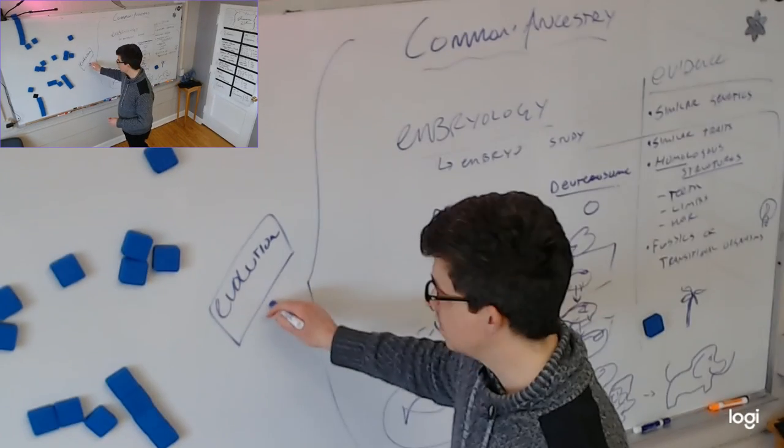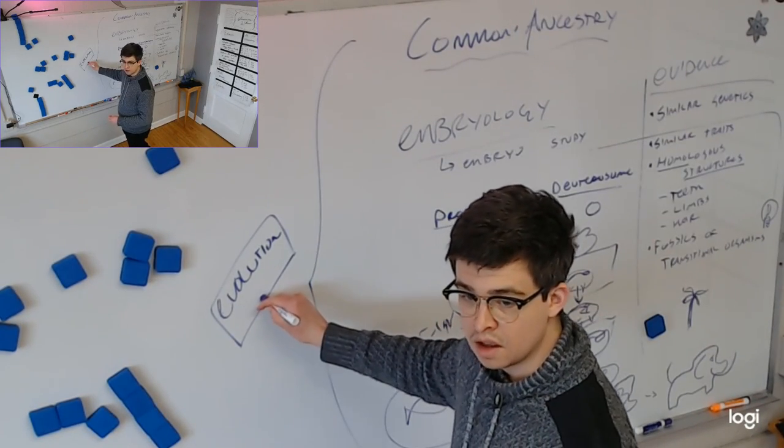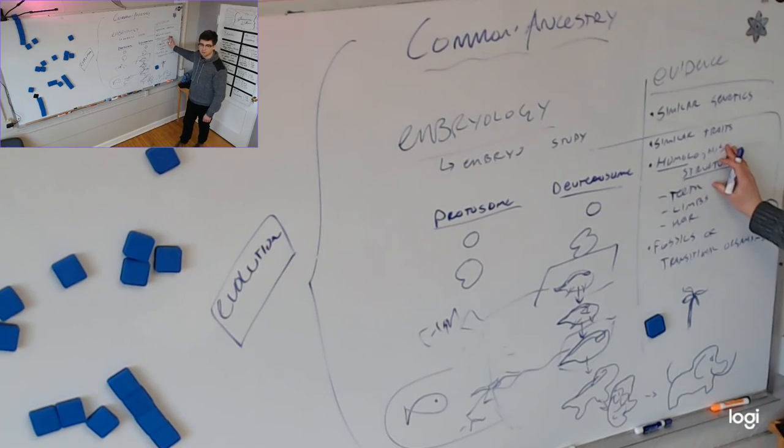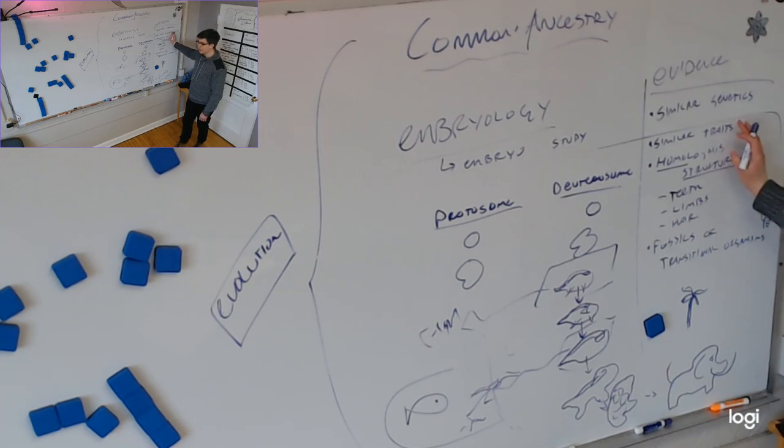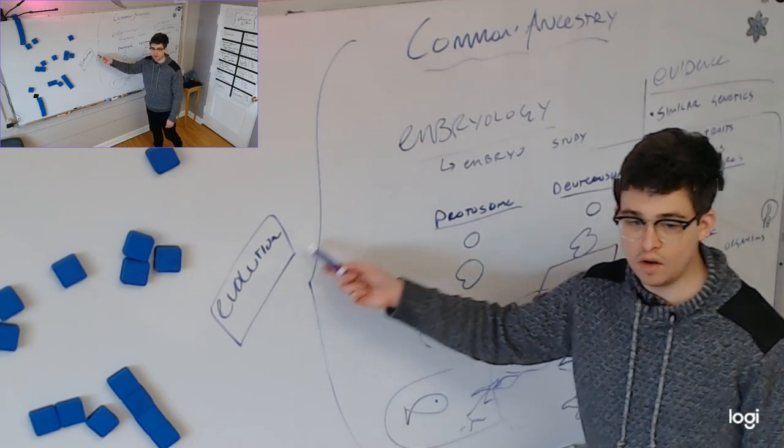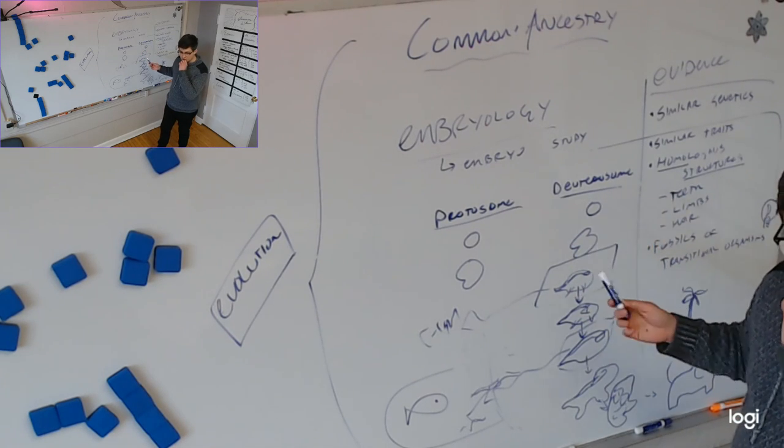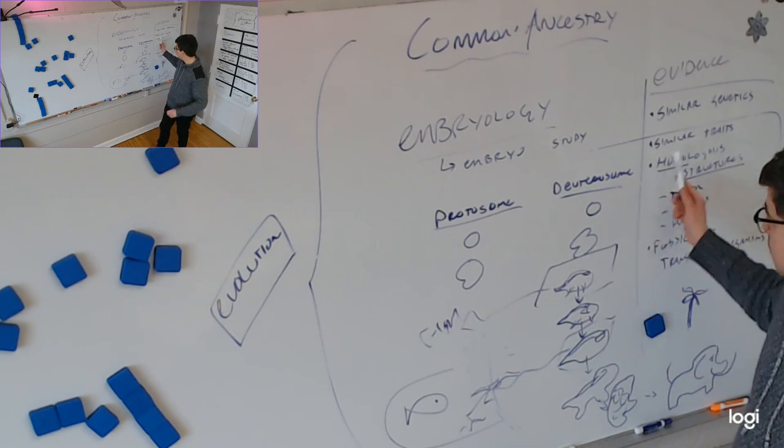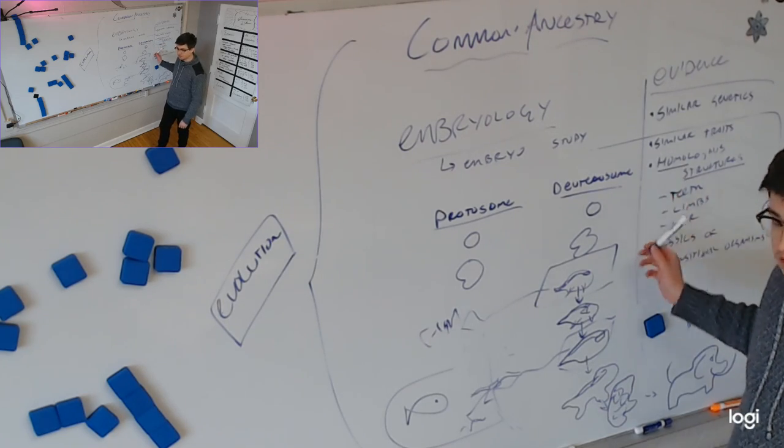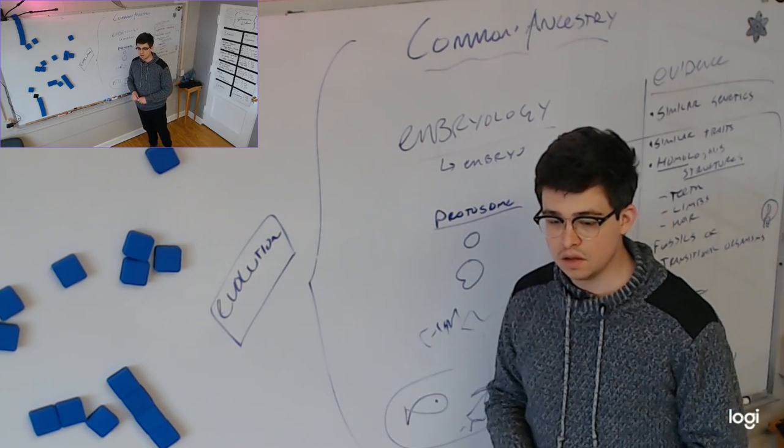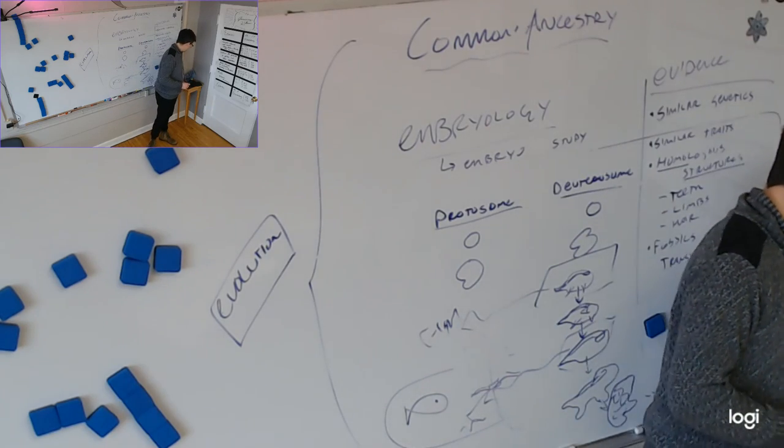No one has the opinion that the evidence is 100% fleshed out. This is what we call a theory that involves the change of one organism over time into another to adapt to its environment. Do you have questions? Do you see how the evidence suggests that? Do you see how this evidence fits with this theory?